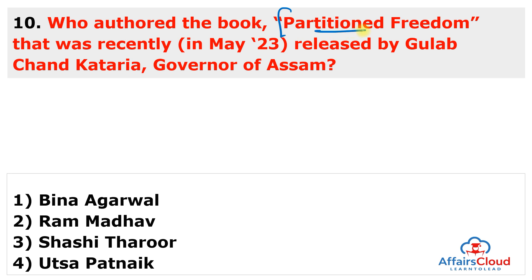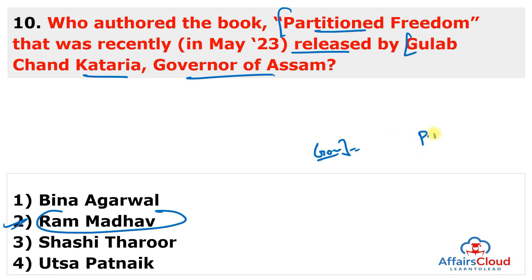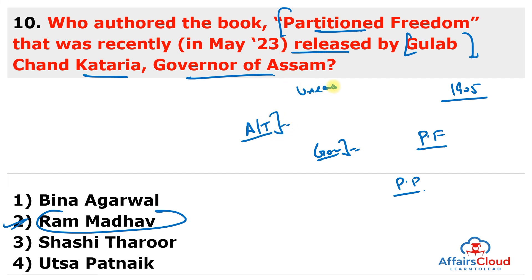Next question: Who authored the book 'Partitioned Freedom,' recently released by Gulab Chand Kataria, the Governor of Assam? This book was authored by Ram Madhav and published by Prabhat Prakashan Private Limited, released in Guwahati, Assam. The book offers profound insights into events that unfolded during 1905 and the pre-independence era. Ram Madhav is an Indian politician, author, and thinker. His other famous book is 'Uneasy Neighbours: India and China After 50 Years of War,' also known in Hindi as 'Sahaj Padosi.'